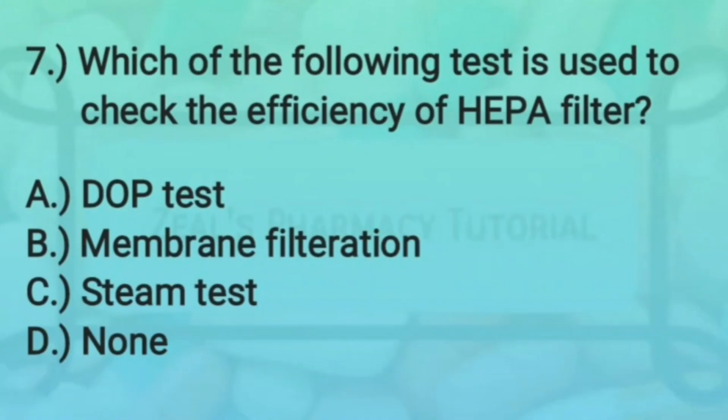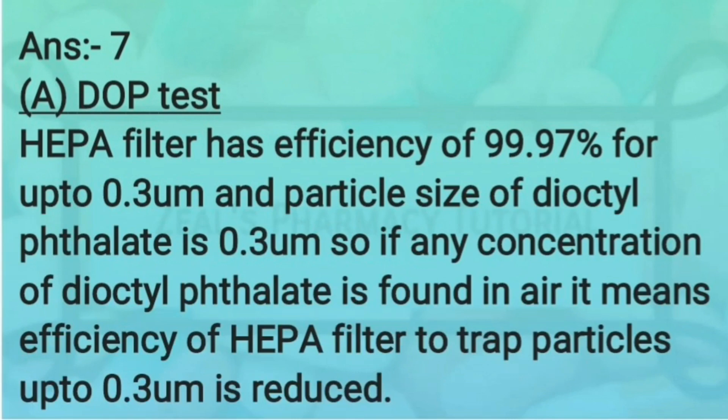Question seven: which of the following tests is used to check the efficiency of a HEPA filter — DOP test, membrane filtration, steam test, or none? The correct answer is the DOP test. The HEPA filter has an efficiency of 99.97% for particles up to 0.3 micrometers. The particle size of di-octyl phthalate (DOP) is 0.3 micrometers.